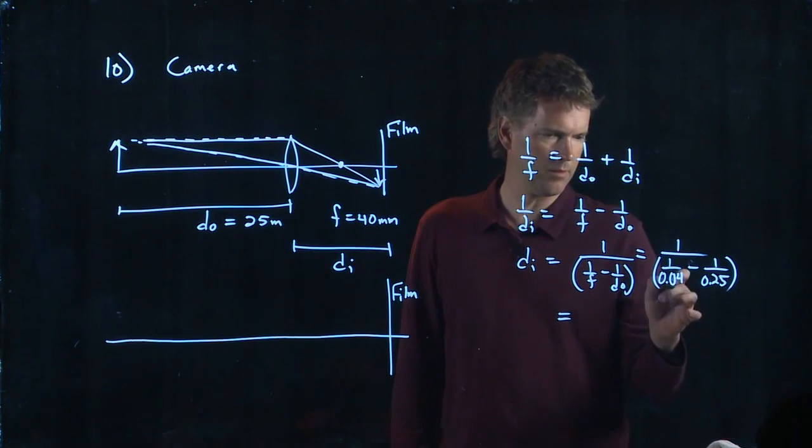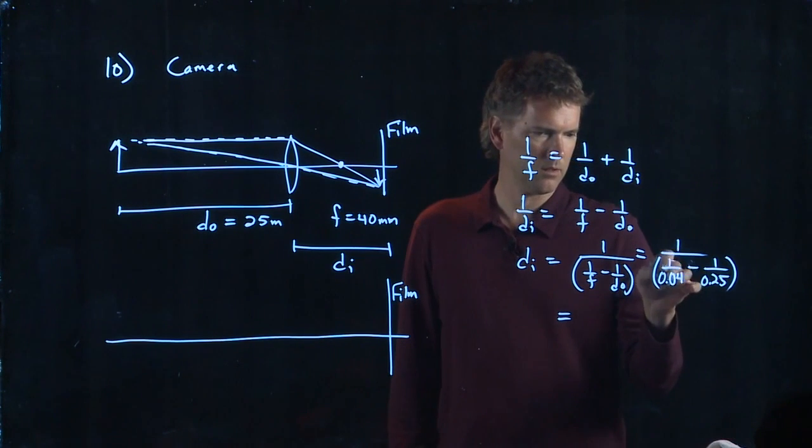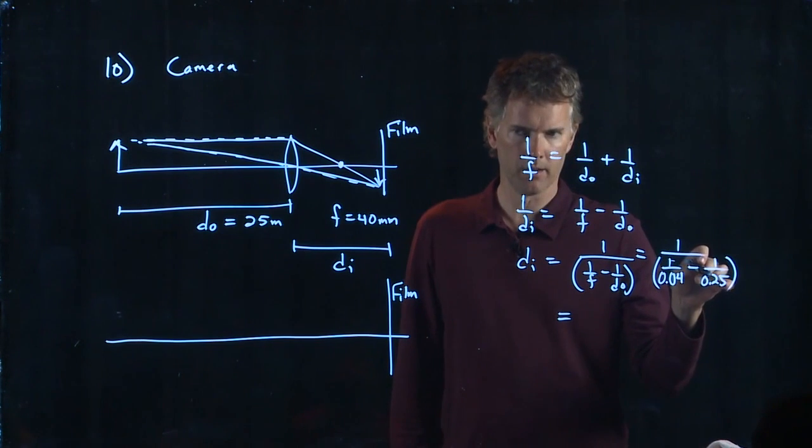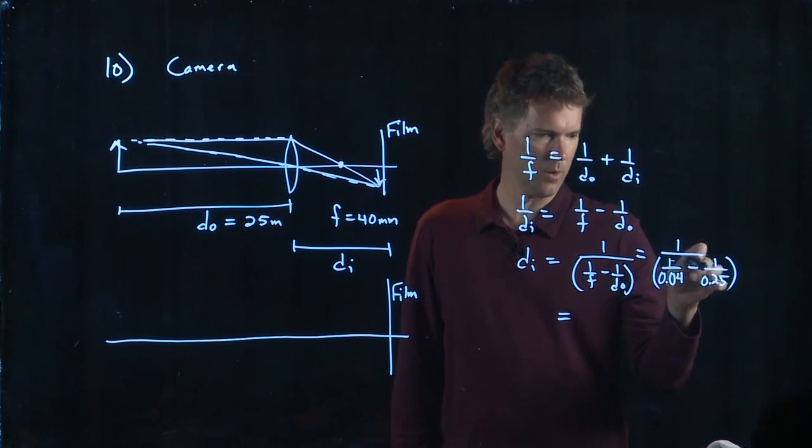Because this is going to be like 20. And this is 4, right? So we're going to get 20 minus 4, so that's about 16.